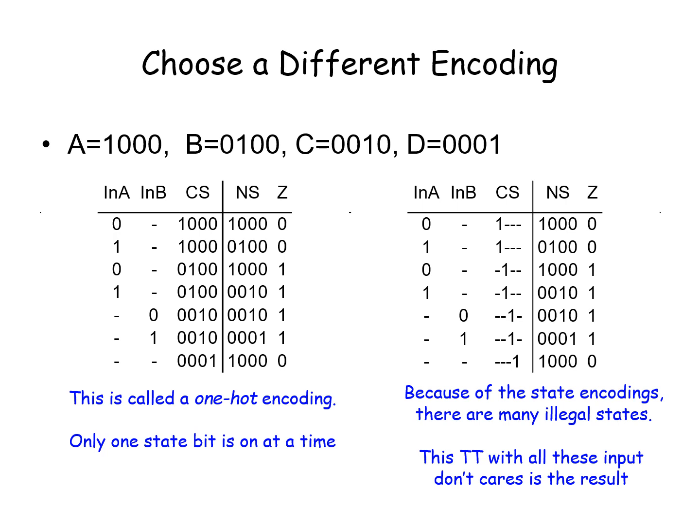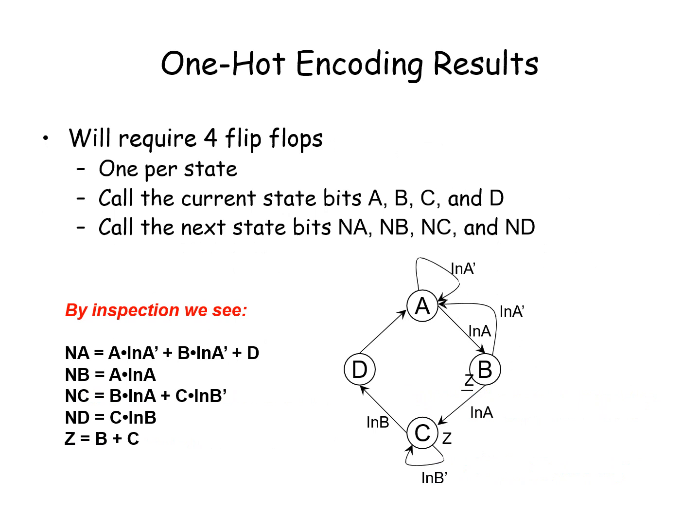Now, as per the state diagram, draw the state table. This is called one-hot coding. Only one bit is on at a time. Now, from the state table, this is filled. Now, we are going to calculate what will be the diagram and you will get the answers.